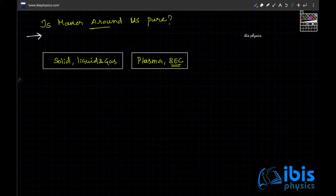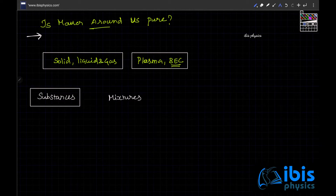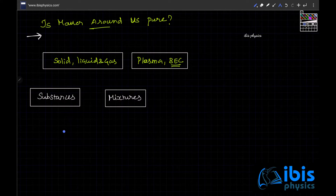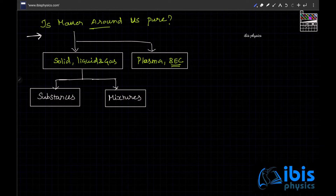These solids, liquids, and gases make up the everyday matter that we come across. For our convenience, they can be resolved into two major categories: one is substances, and the other one is mixtures. So matter is either a solid, liquid, gas, plasma, or Bose-Einstein condensate, and we classify this matter into the two convenient categories of substance and mixture.